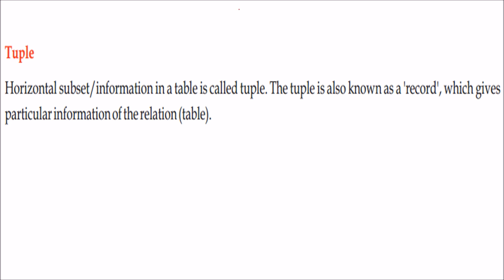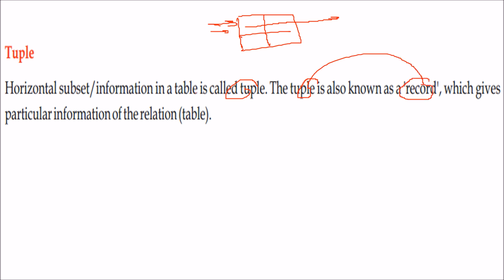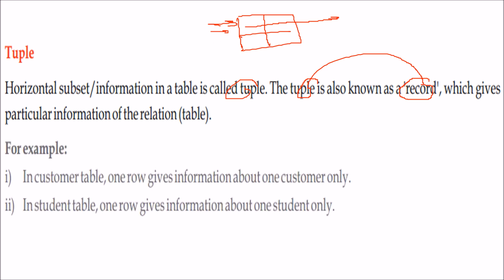What is a tuple? A tuple is a record of interrelated data. The horizontal subset of information in a table is called a tuple, also known as a record, which gives particular information about the table or relation. For example, in a customer table, one row gives information about one customer; in a student table, one row gives information about one student.